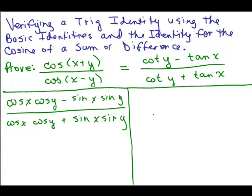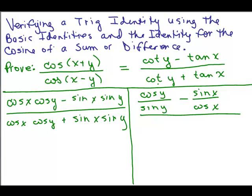The numerator here, cotangent of Y is cosine of Y over the sine of Y minus, and the tangent of X is the sine of X over the cosine of X. Now in the denominator, we've got the cotangent of Y plus the tangent of X. So it's going to look exactly the same as the numerator except a plus sign there. Cosine Y over sine of Y plus sine of X over cosine X.